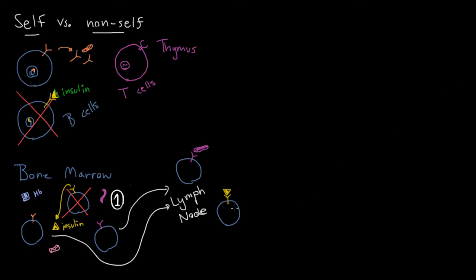After binding to that self protein, the escaped B cell will ingest it, break it up into little pieces, and present those pieces on an MHC2 molecule — perhaps different pieces on different MHC2 molecules. The reason it does this is because it needs a T cell to come along that will recognize that same piece on its surface, and it needs that in order to activate. So it's going to sit there and wait for a T cell with the perfect receptor to come along. They will interact and have a kind of intercellular interaction that will finally allow this B cell to activate. Without the T cell coming and recognizing the antigen, the B cell cannot activate.